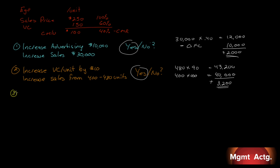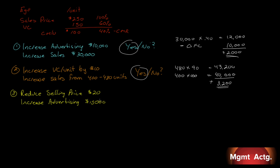Let's try another one. Let's say we're going to reduce our selling price by $20. From economics, we reduce our price and demand should increase. But we've got to let people know, so let's also increase our advertising expense by $15,000. Our marketing director and product manager say if we do these two things — reduce our price and increase advertising — we should increase our sales by 50%, going from 400 to 600 units. Should we do it? In a traditional income statement format, you would have to start with sales, less cost of goods sold, and work your way down.